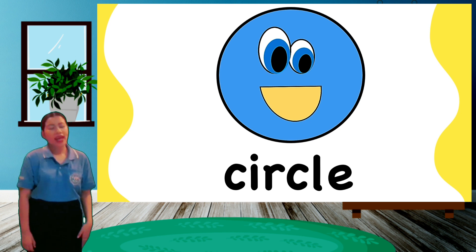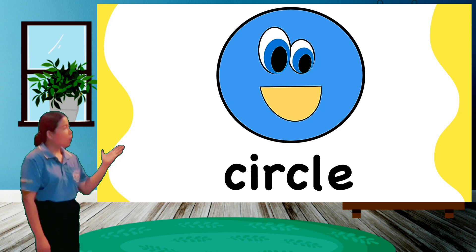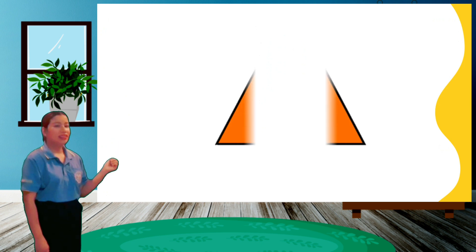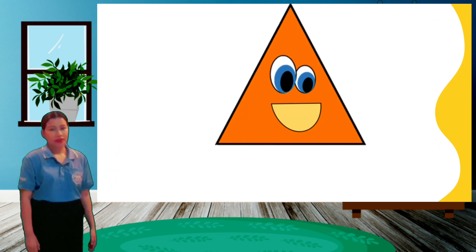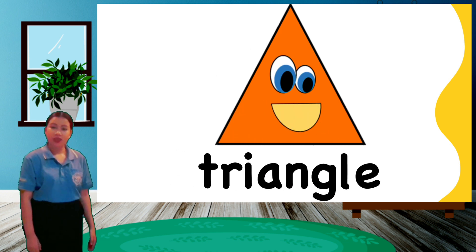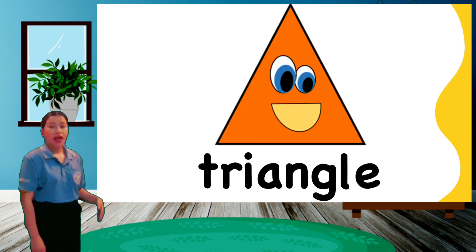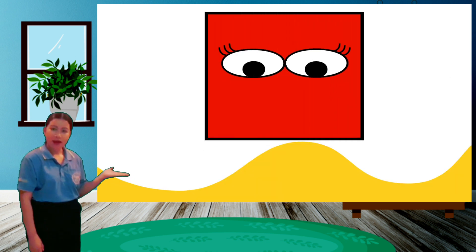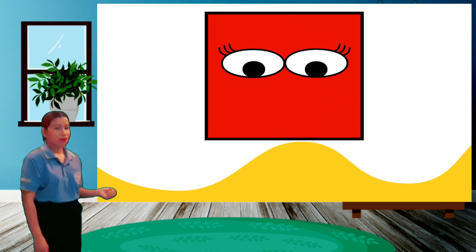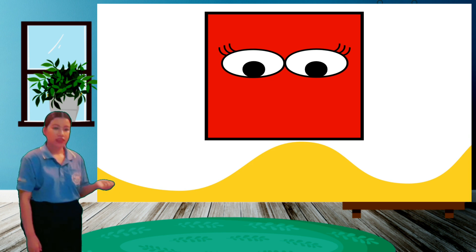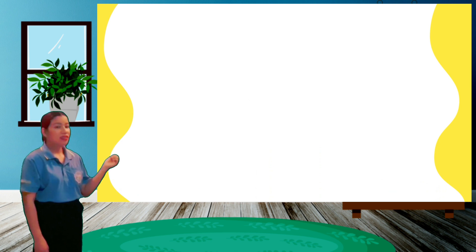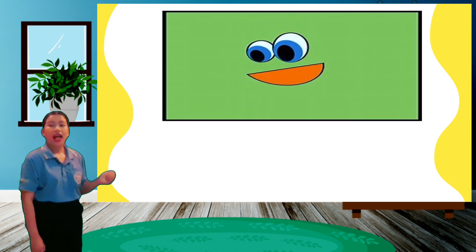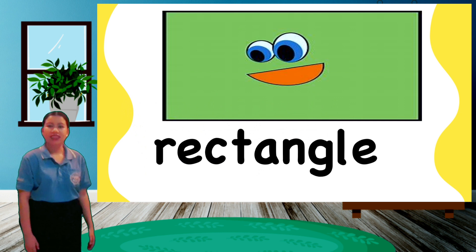Next, we have here a triangle — an orange triangle. The next one is a square. Please repeat after me: a red square. The next shape is a rectangle — a green rectangle.